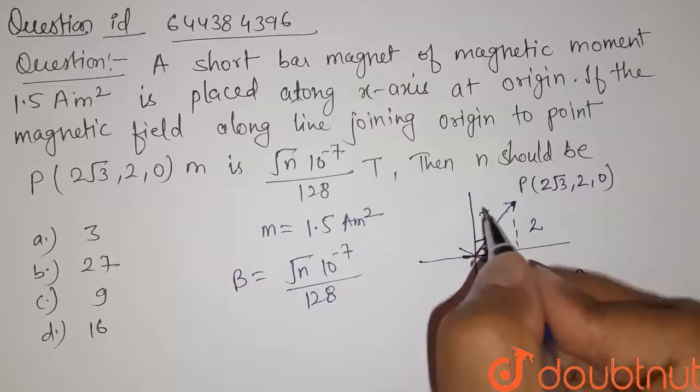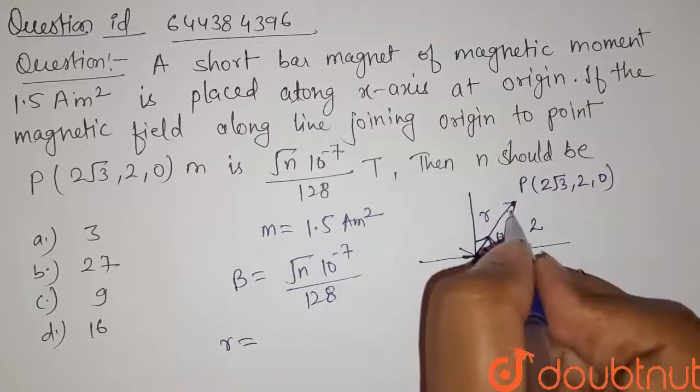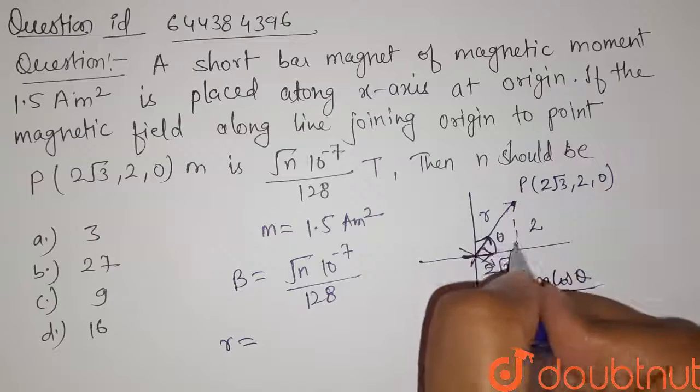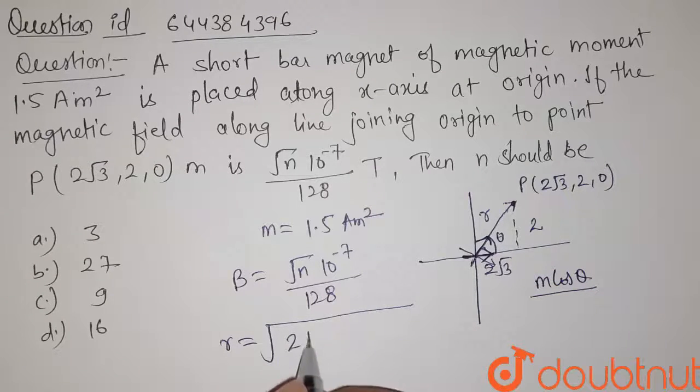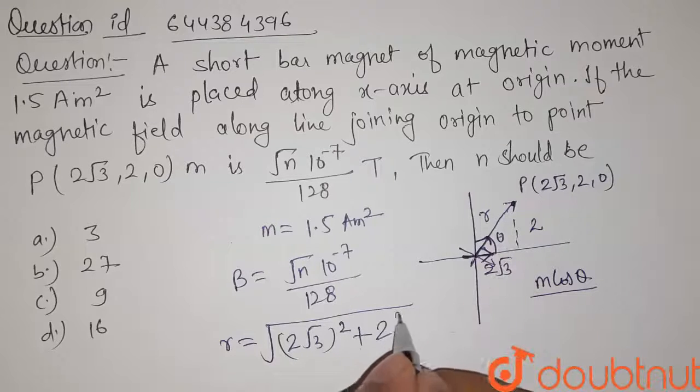Let us take it to be r, is the hypotenuse for this right angle triangle, so it will be equals to base square, that is 2√3 square, plus perpendicular square.